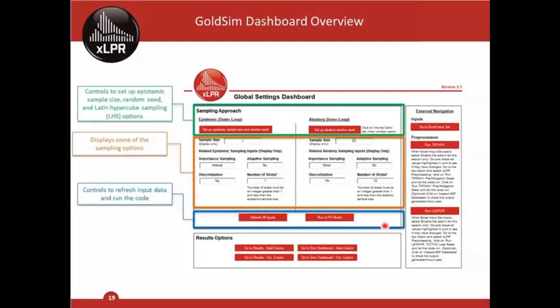Some sampling options are for the epistemic loop — the outer loop — and some are for the aleatory loop — the inner loop. Whatever you change in sampling is reflected in the display below. The display shows all sampling options: sample size, whether you use importance sampling or not, whether you use adaptive sampling, the discretization if using DPD, and so on. This display is for information only — you cannot change settings there. Once you've confirmed the settings, you can run the code using the two buttons in the blue box: 'Refresh All Inputs' and 'Run the Model.'